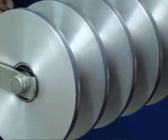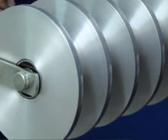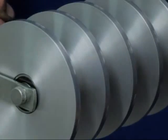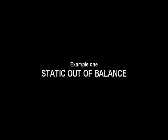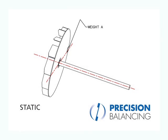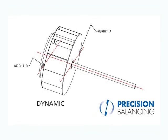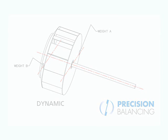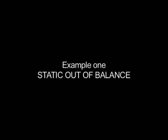Static and dynamic out-of-balance is uneven mass distribution around the rotational axis of the rotating object. Static out-of-balance is uneven mass on the rotating object's axis in a single plane, causing the object to fall to the lowest, heaviest position when it settles at the point of rest. Dynamic out-of-balance is in two planes and can only be detected when the object is rotating and the uneven mass is distributed around the object from one end to the other.